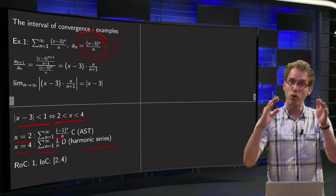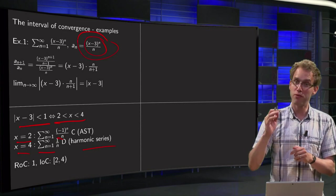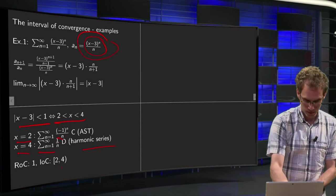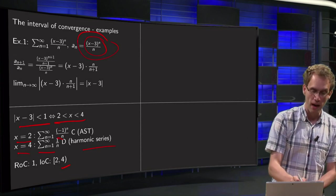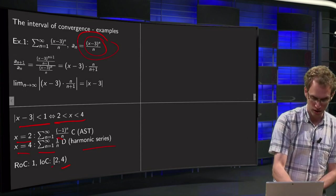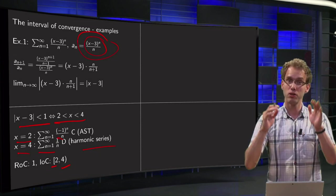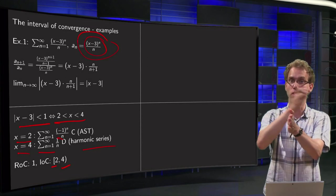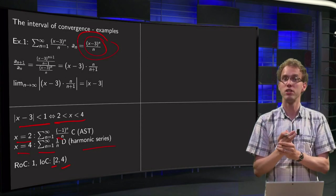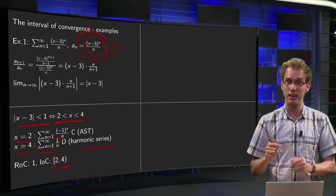So now we know everything. Convergent between 2 and 4, divergent at 4, so 4 is not part of the interval of convergence, and convergent for x=2. So there we have our interval of convergence [2,4), centre equals 3, distance from 3 to 2 or from 3 to 4 equals 1, so this distance was called our radius of convergence, and that equals 1.